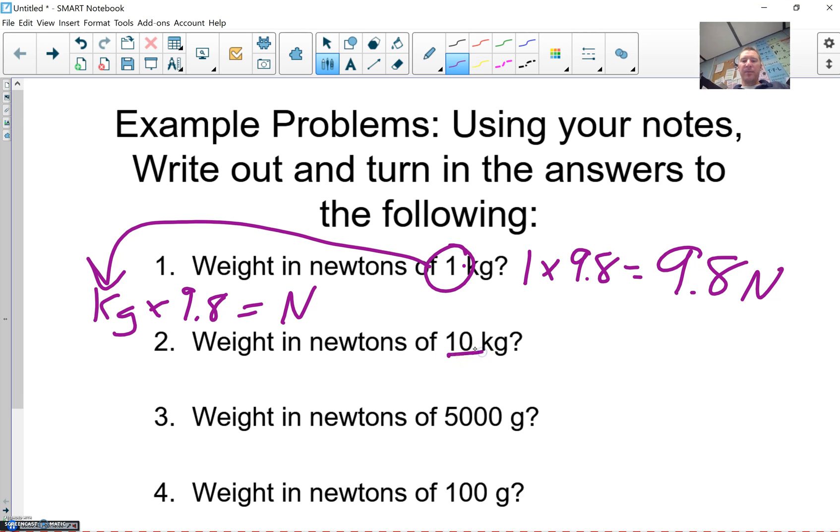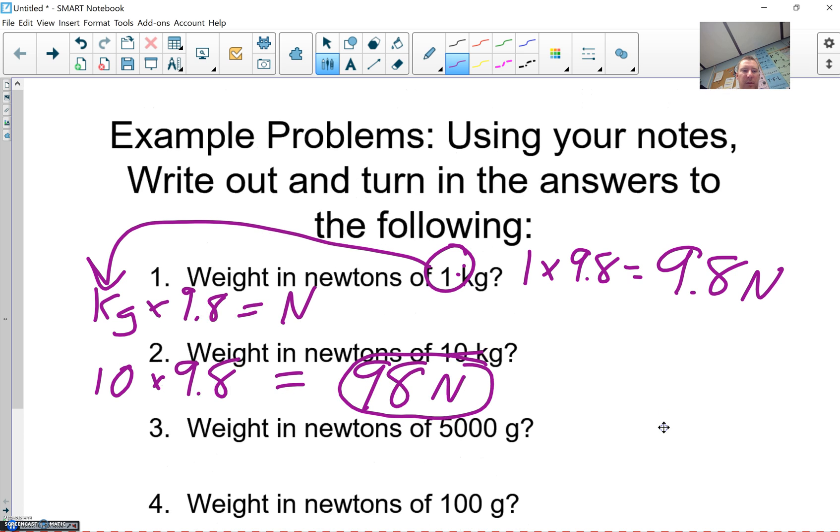Working with 10, if you recognize that we're just moving decimal points around, you can recognize that if you have 10 times more kilograms, well, 10 times more than 9.8 would simply work out to be 10 times 9.8, and that works out to be 98 newtons. Boom. All right, so that's the first two.